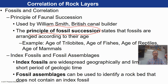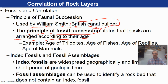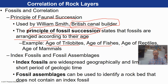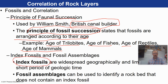The big principle here is called the principle of faunal succession or fossil succession, which states that fossils are arranged according to their age. A lot of the names for the different periods came about because the British during the Industrial Revolution were building canals across Britain and figured out that if they found the same fossils in one part of Britain as another, it must be the same age of rock. You labeled the age of trilobites (early Paleozoic), the age of fishes (middle-late Paleozoic), the age of reptiles (Mesozoic), and now we're in the age of mammals.